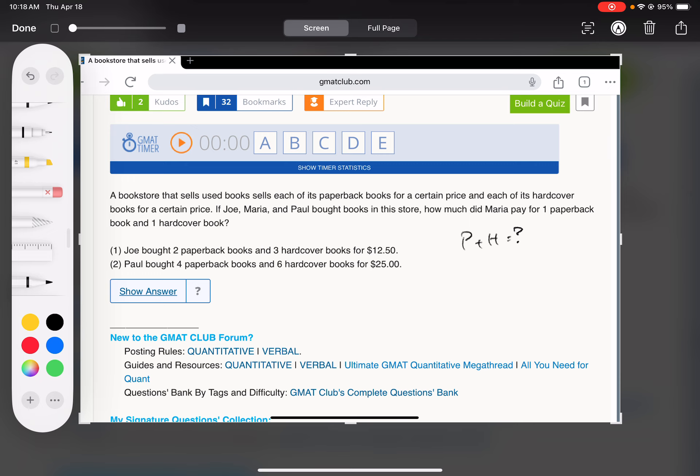Okay, classic GMAT. All right, so number one, Joe bought two paperback books and three hardcover books for $12.50. So we know 2P plus 3H equals $12.50. And then we can simplify there.